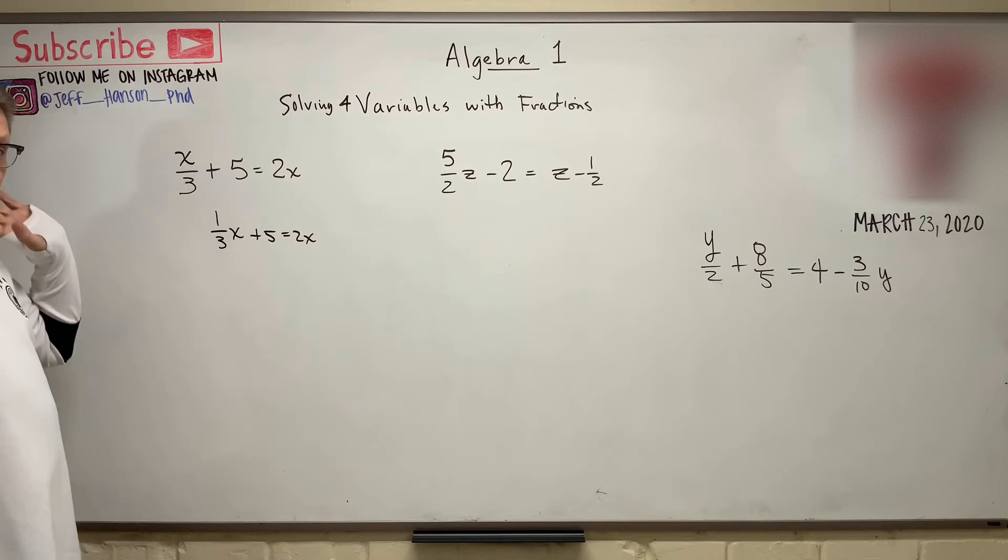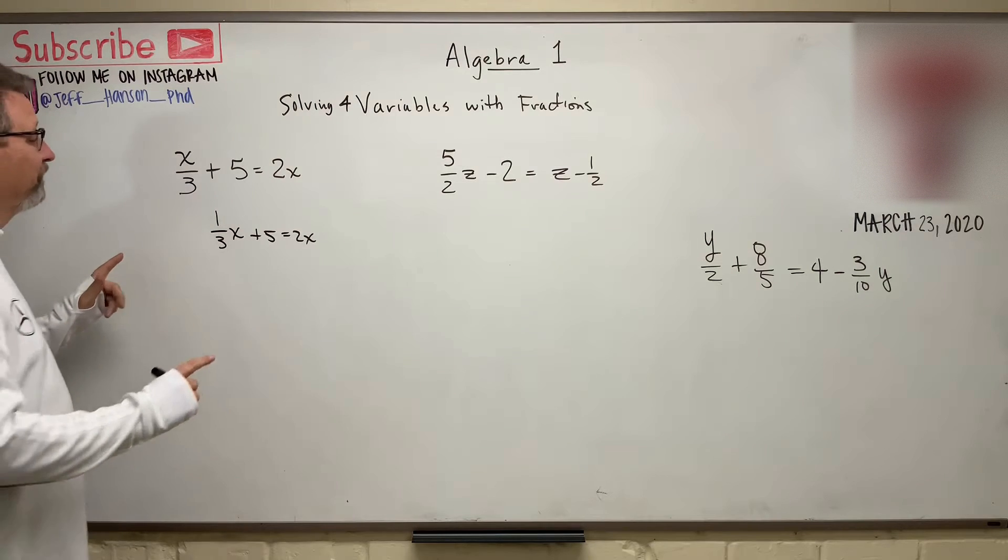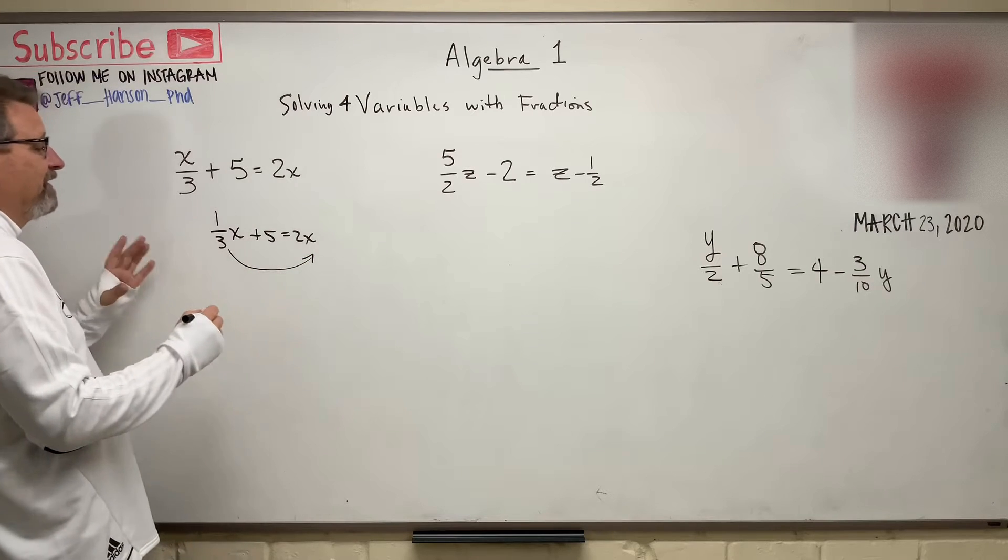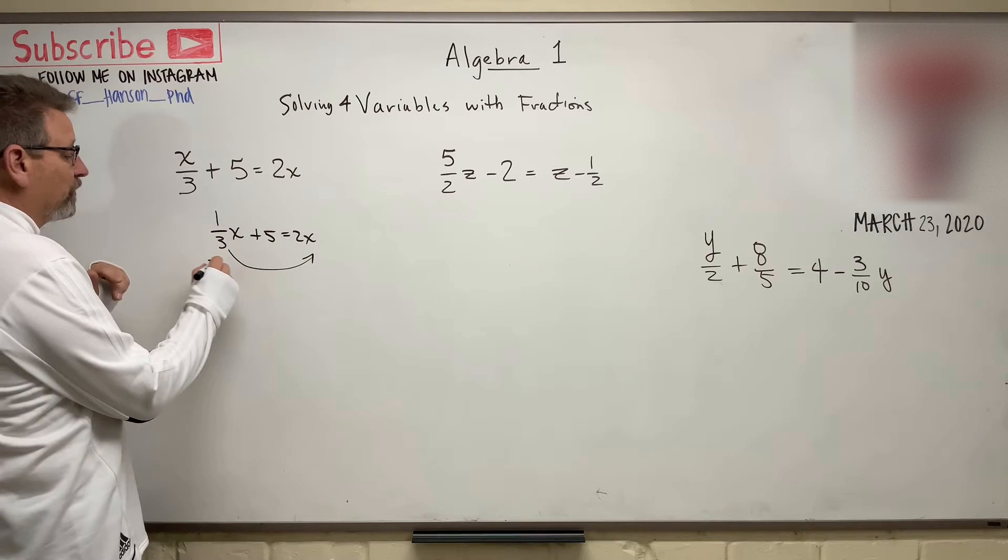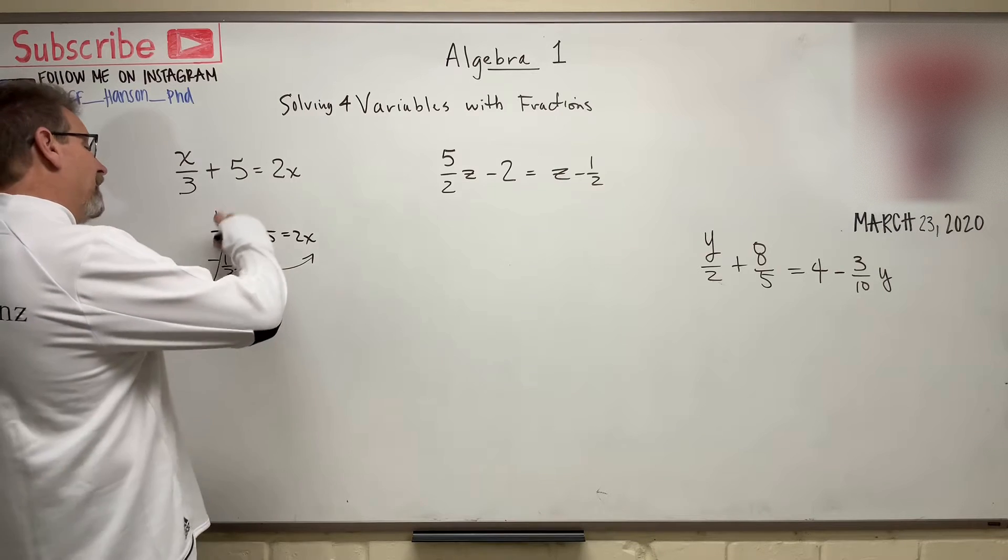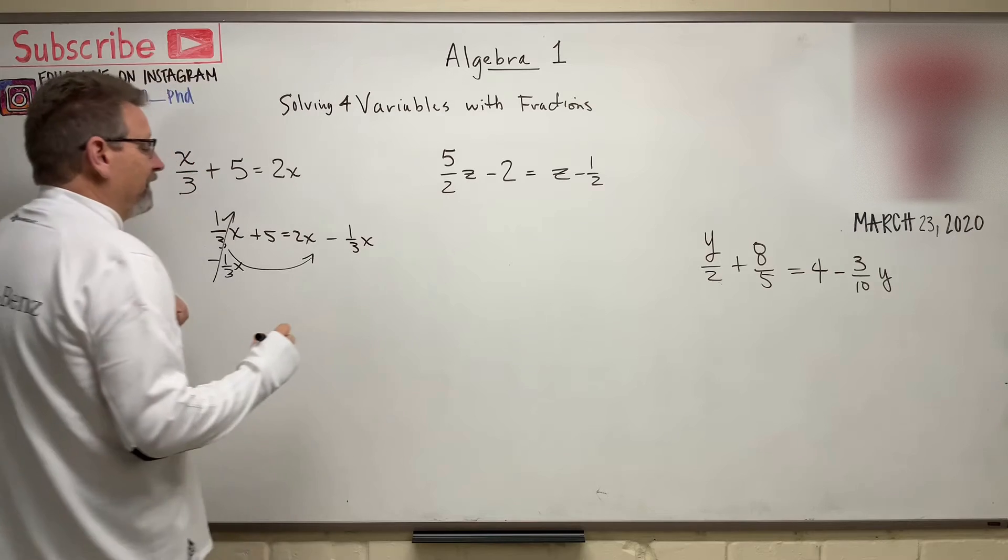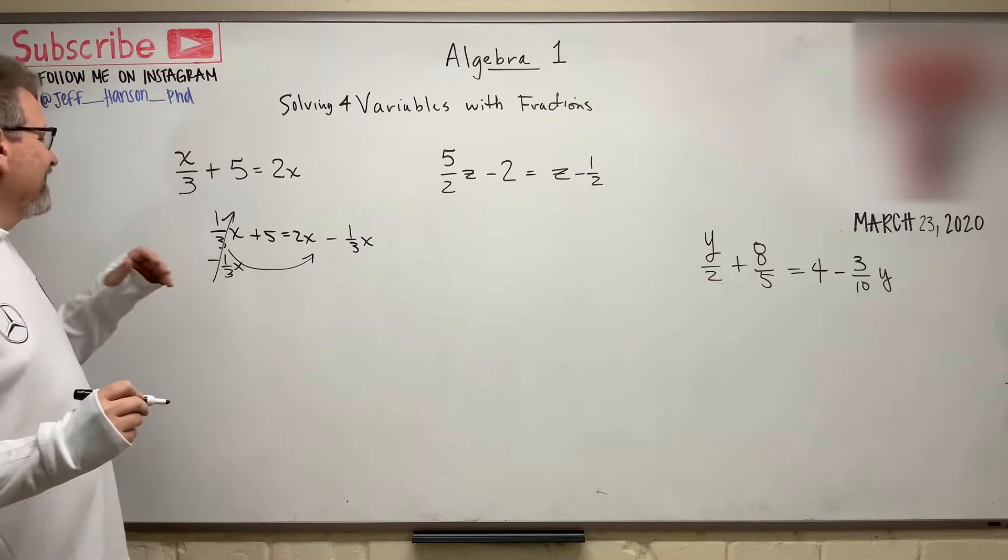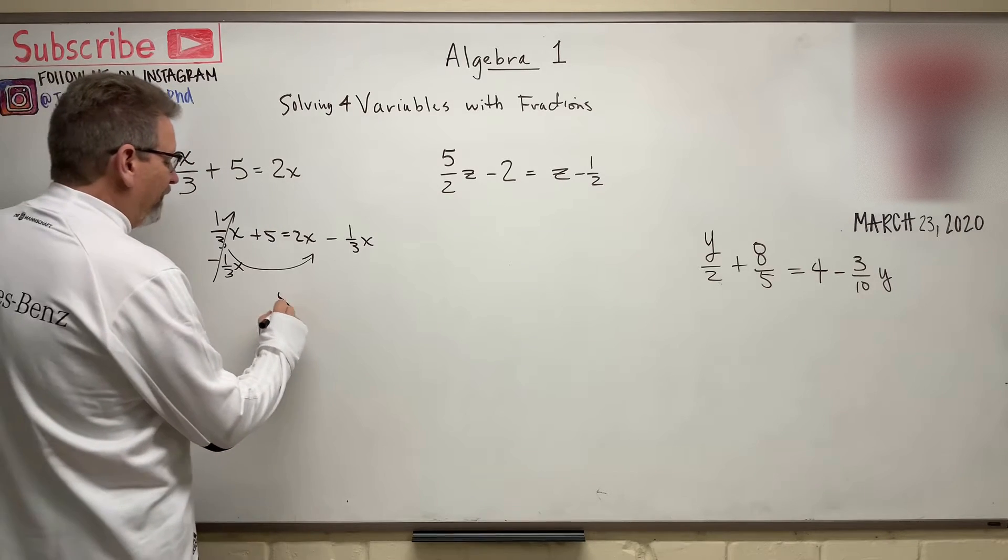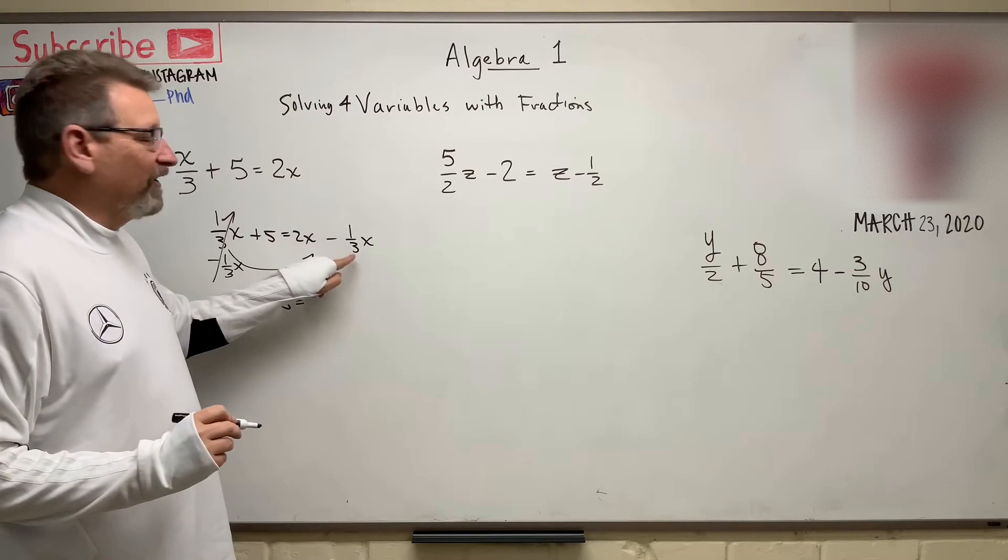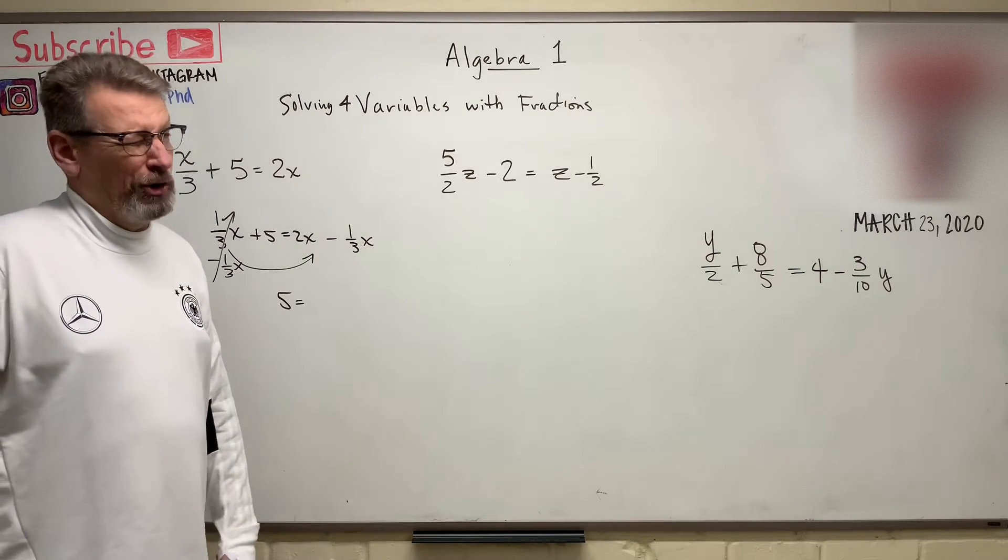So again, we want to get the isolated variables by themselves, group all the x's. So let's move this guy to the other side. How are we going to do that? It's positive over here, so we're going to subtract 1 third x. So that whole thing will go to zero, and there's minus 1 third x on that side. So what do we have left? We have 5 is equal to 2 minus 1 third.